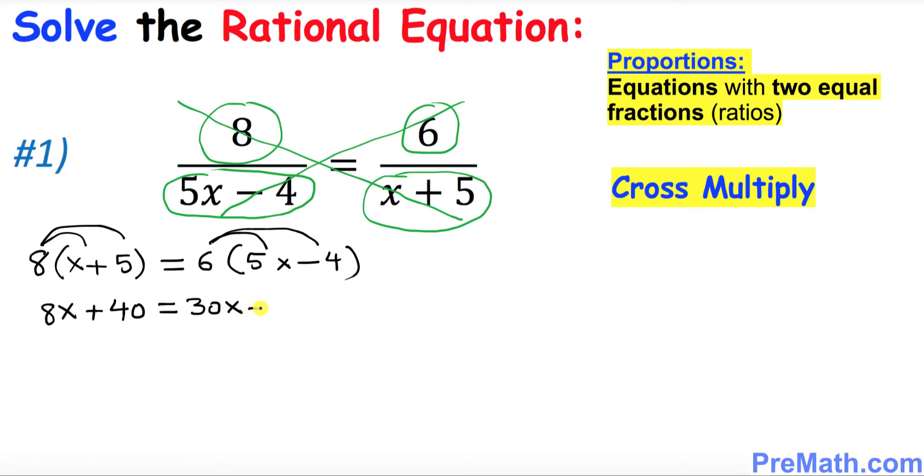The next thing we're going to do is subtract 8x from both sides because we want to bring x's on one side and constant on the other. So we end up with 40 equals to 30x minus 8x, which is 22x minus 24.